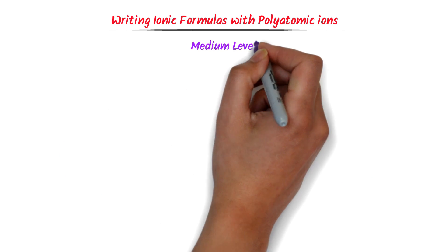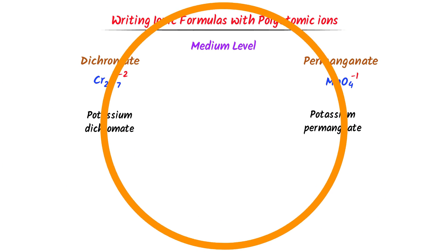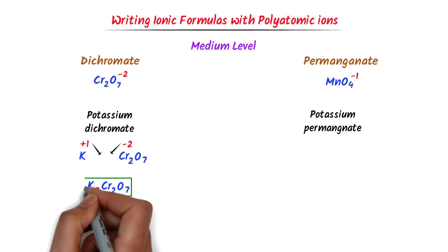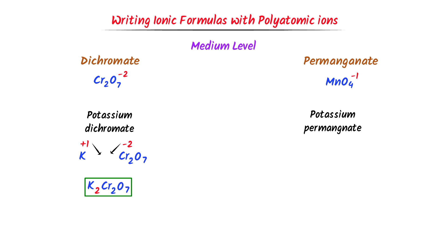Now let me teach you a medium-level concept of polyatomic ions like dichromate and permanganate. Potassium is in group 1 with oxidation state positive 1. The charge on dichromate ion is negative 2. I cross their respective charges and I get K₂Cr₂O₇ — potassium dichromate. This is the chemical formula of potassium dichromate.